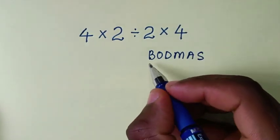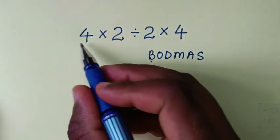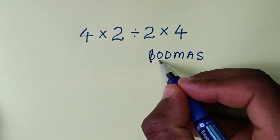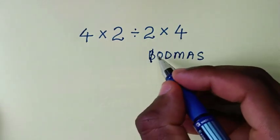B is for brackets - we don't have brackets in this problem. O is for order or exponents - we don't have those either.